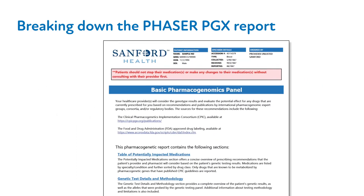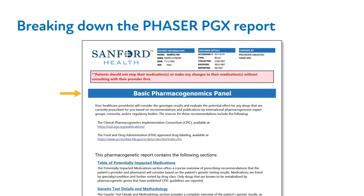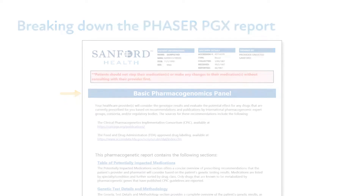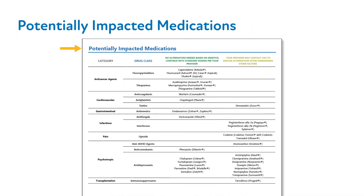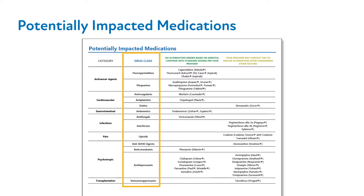Within the section titled Basic Pharmacogenomics Panel is a summary of the sections of the PGX report. Potentially Impacted Medications displays a table that summarizes how your patient may respond to medications that are affected by the genes tested as part of this panel. The report summary table is organized by medication category of use and further categorized by group of similar medications within the column titled Drug Class.